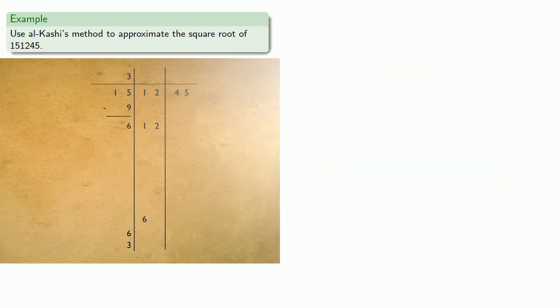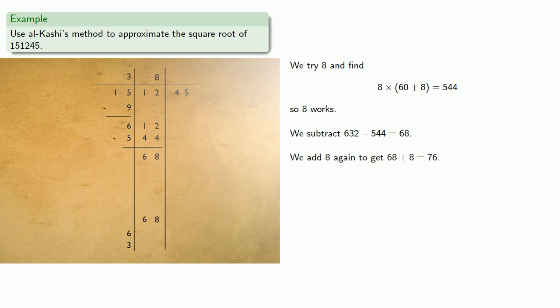So we try 8, and find 8 times 60 plus 8. So 8 works. We subtract, then add our guess again to get 68 plus 8, which is 76. And we shift.